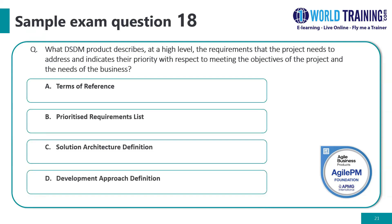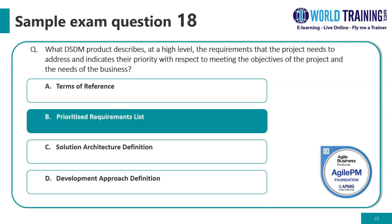Question eighteen: the correct answer is to address and indicate their priority with respect to meeting the objectives of the project and the needs of the business. The correct answer is: prioritize requirements first.